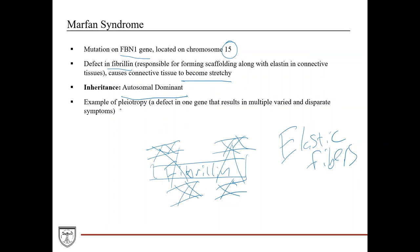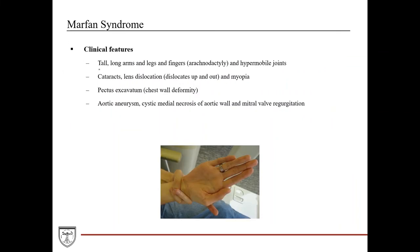Clinically, Marfan syndrome patients are classically tall with long arms, legs, and fingers — the long fingers are called arachnodactyly. It's not uncommon to see these patients as high-performance athletes, especially in sports such as basketball or volleyball where being tall is a huge advantage. They often have hypermobile joints as well. Pay close attention to these features in question stems and in clinical practice.